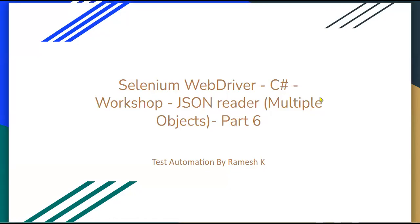Hello everyone, welcome to the Selenium WebDriver with C# workshop, part six. In this session, I'm going to talk about data for multiple objects in a JSON file. In the previous session, we talked about reading data from a JSON file with only a single object — one set of data. Now let's see how to implement this part.